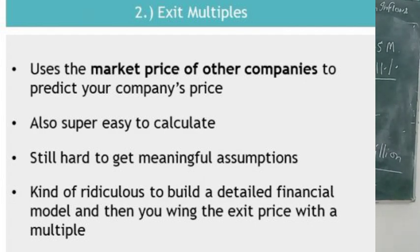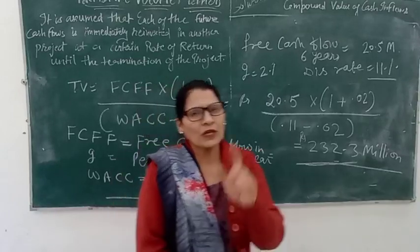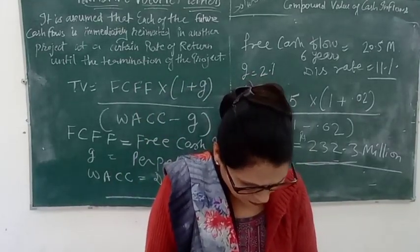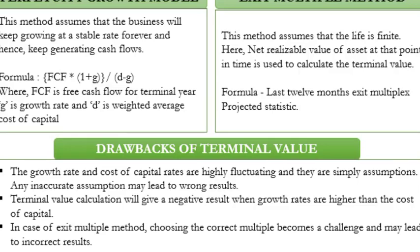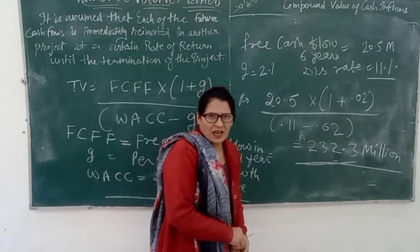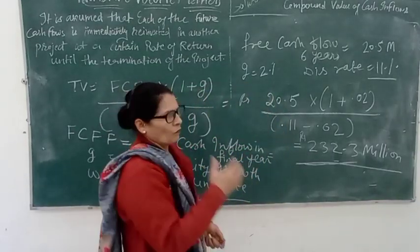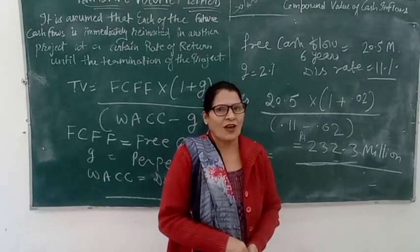These are the methods we have seen today: the terminal value method, which is the last method of capital budgeting. The limitations include that you cannot predict the exact accounting growth rate or the life of the project. The exit multiple method is also limited by the dynamic nature of multiples, which change as time passes. The future is uncertain, so careful consideration should be taken wherever we apply the terminal value method.